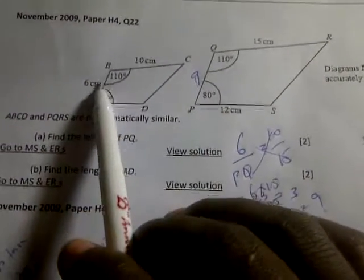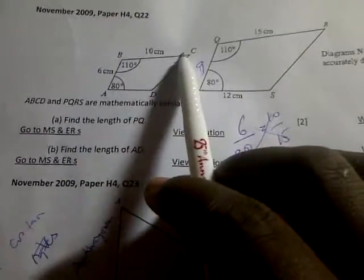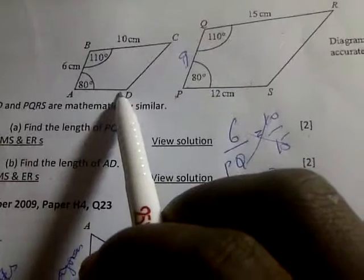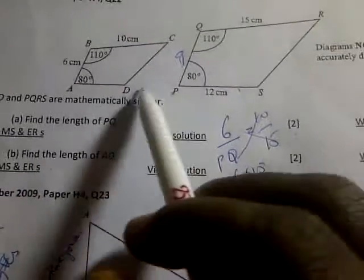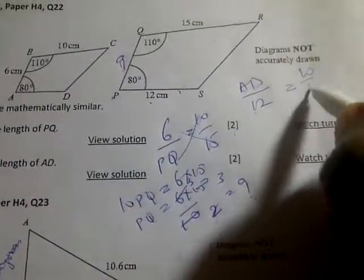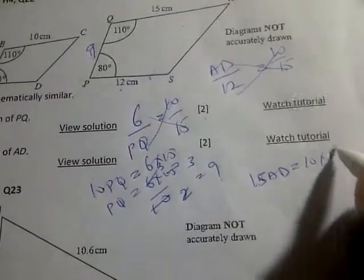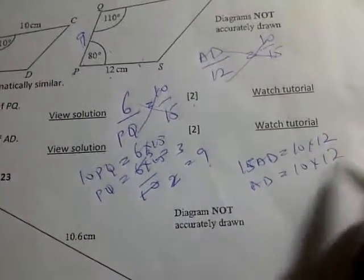Remember how we did it: we took this given side over the side we're looking for, equal to this corresponding side over this side — that's how we got PQ. Now let's find the length of AD. They must give you the similar side on the other object. For AD, we have AD over 12 equal to 10 over 15. Cross-multiplying, we have 15 AD equal to 10 times 12, so AD equals 10 times 12 divided by 15.